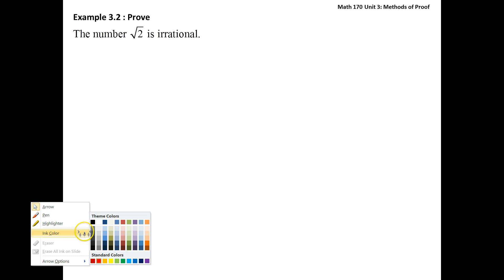Okay, this is our second example of proof by contradiction. We're asked to prove that the square root of 2 is irrational.